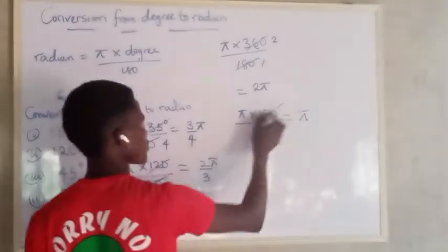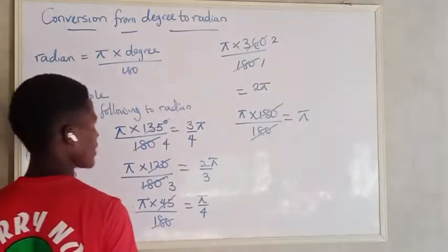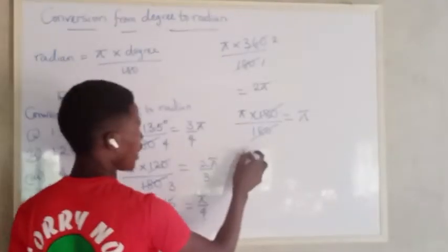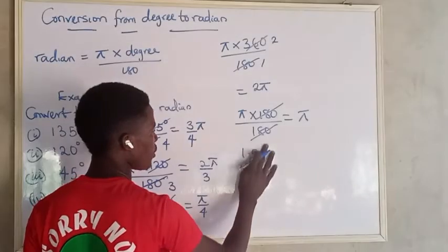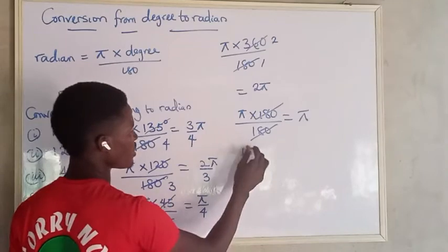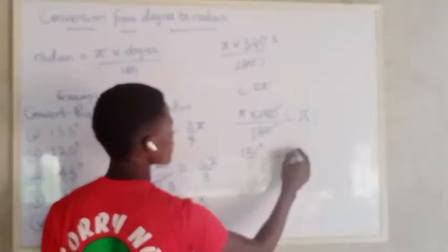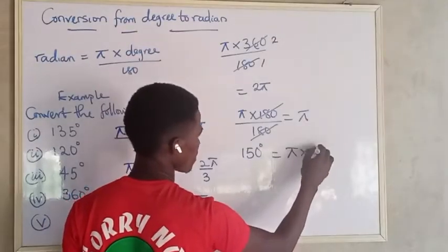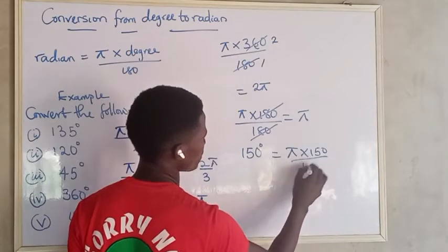Alright, so let's say we have, let's say I want to convert 150 degrees also. Pi multiplied by 150 divided by 180.